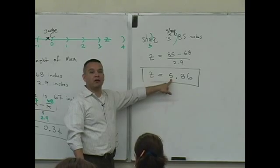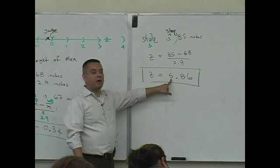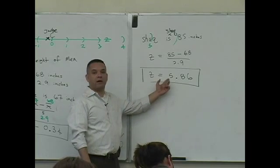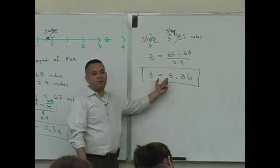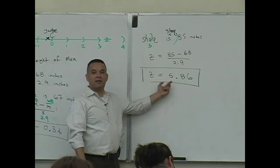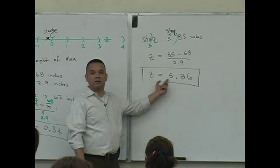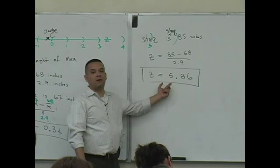He's off the charts here. So the language now is that, if you see a value there, like in this case a 5, you're going to say Shaq is more than 5 standard deviations above the mean here, because it's a positive value.